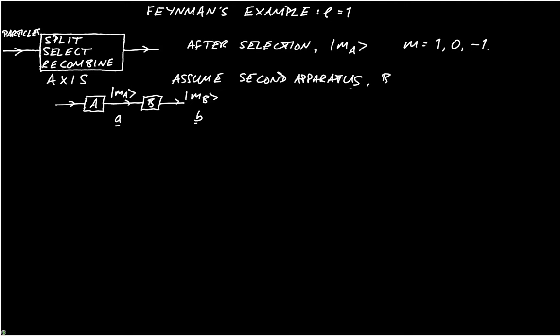The fraction of particles, which were selected by A, which leave B, will be given by, we'll call this alpha, and it's going to be the square modulus of ket M, A. That's what comes out of A, taken with bra M, B. And that's the squared modulus, because we want the total fraction rather than the amplitude.